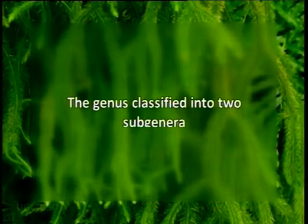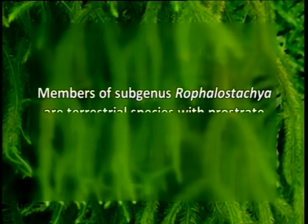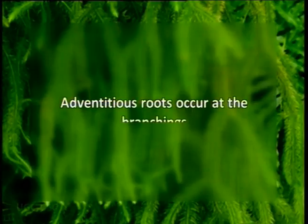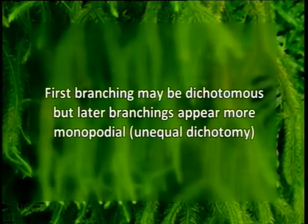The genus has been classified into two subgenera. Members of subgenus Rhodostachia are terrestrial species with prostrate creeping axis and erect branches. The adventitious roots occur at the branchings. The first branching may be dichotomous, but later branchings may appear more monopodial. Sporophylls with dentate margins are smaller than foliage leaves and form strobili, which are simple or branched. Species of this subgenus do not form bulbils.